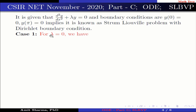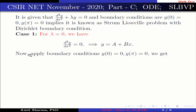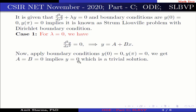Case 1: For λ = 0, we have d²y/dx² = 0, which implies y = a + bx. Applying boundary conditions y(0) = 0 and y(π) = 0, we get a = b = 0, which implies y = 0. This is a trivial solution.